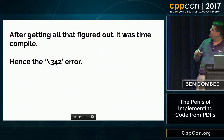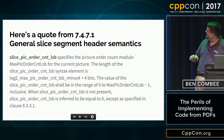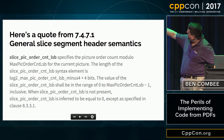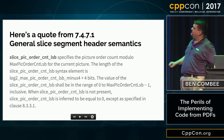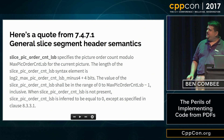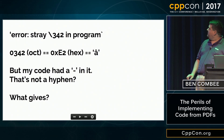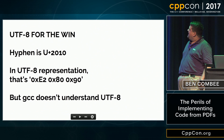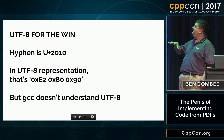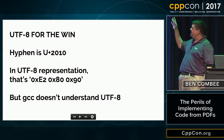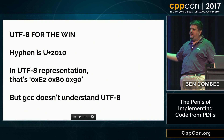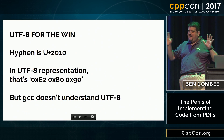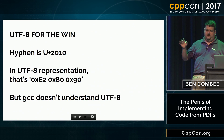Let me take you back to the previous thing. If you look there — "MaxPicOrderCntLSB minus one" — that's where it came from. So why does this not match up? UTF-8. Hyphen is U+2010, so it's represented in three bytes, and GCC doesn't understand UTF-8. It will gladly take it in comments and all, but if you try to use it in code, it just goes... huh?